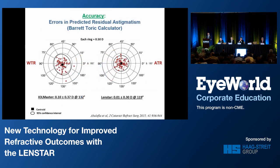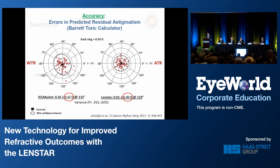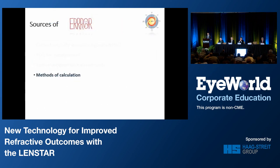What about accuracy? When we evaluated the errors in predicted residual astigmatism following toric IOL implantation, the Lensstar had a significantly lower centroid prediction error and variance compared to the IOLMaster.